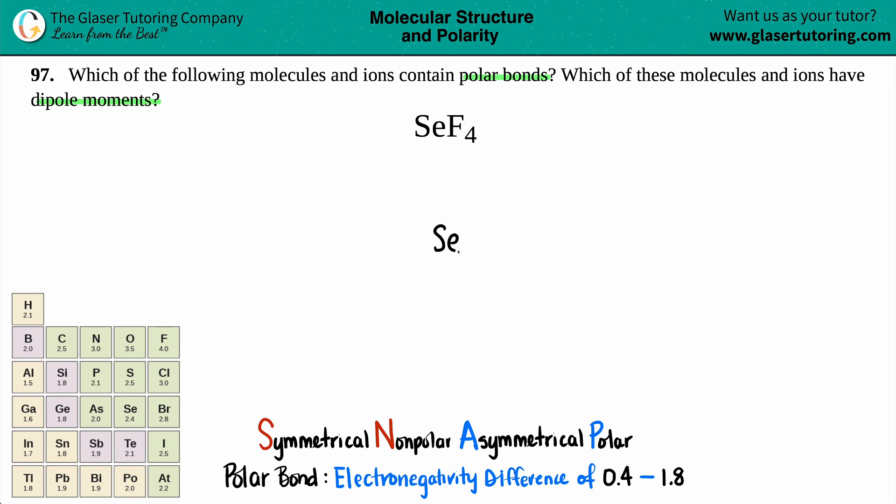Now for SeF4, I have selenium in the middle, because fluorine, if it's a central atom, it's never going to be a central atom, because fluorine is the most electronegative element. So those four fluorines have to be surrounding the selenium. Each fluorine should have a single bond, and then each fluorine should have the six electrons around it to get that octet. And then as I draw these, when I'm done, I'm going to work on selenium.